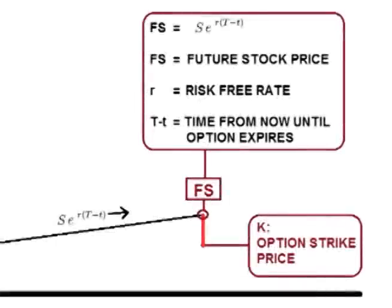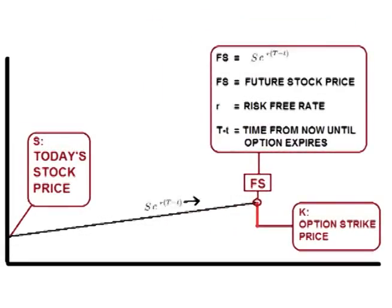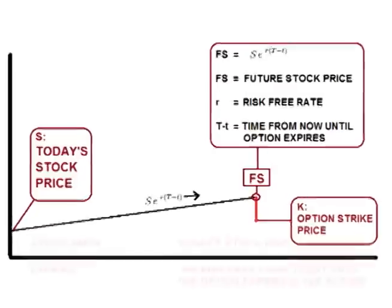Remember that with the risk removed, price will simply drift up at the risk-free rate. This is known as the certainty of movement. Looking at a chart, we have the strike price of the option and we have today's price of the stock. We need to calculate what the price of the stock will be in the future when the option expires by continuously compounding today's stock price at the risk-free rate.